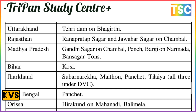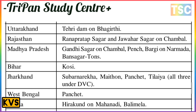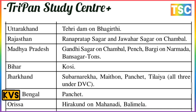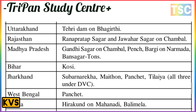Uttarakhand has several important plants. Rajasthan has Rana Pratap Sagar and Jawahar Sagar on Chambal. Madhya Pradesh has Gandhi Sagar, Chambal, Pench, and Narmada. Bihar has only Koshi as its hydroelectricity producer. Jharkhand has Subra, Rekha, Maithon, Panchet, and DVC. West Bengal has Panchet as its most important hydro station.